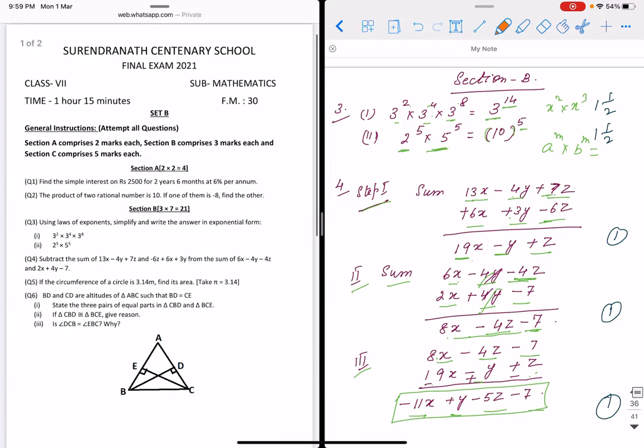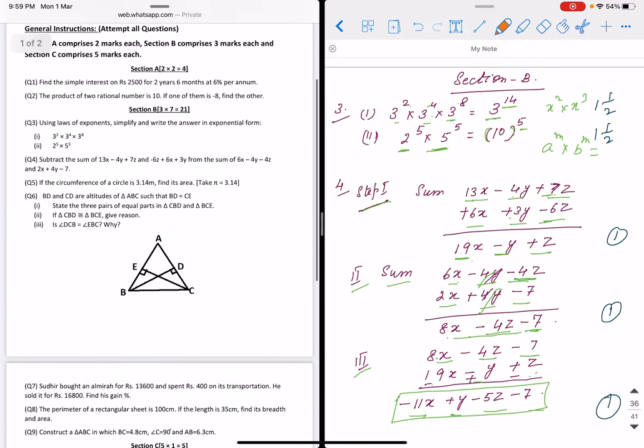Now Section B, which are 3 marks questions each. Exponent chapter: 3², 3⁴, and 3⁸. We know if the base is the same with multiplication, we add the powers. So it will be 2 + 4 = 6, and 6 + 8 = 14. Therefore, 3¹⁴.